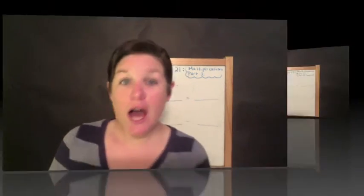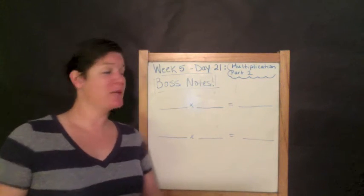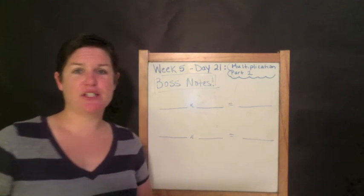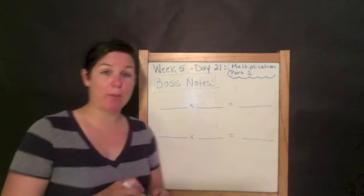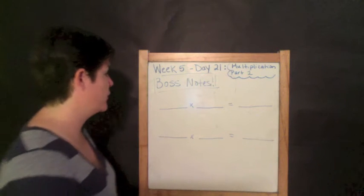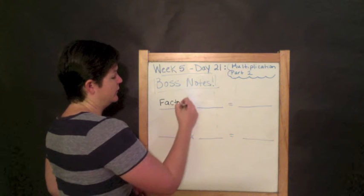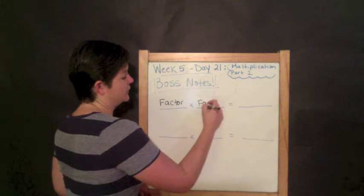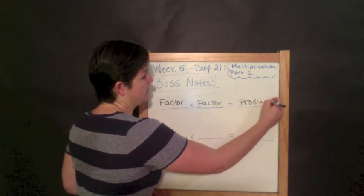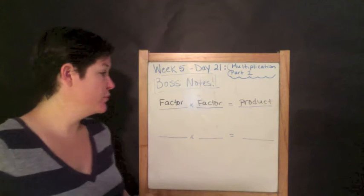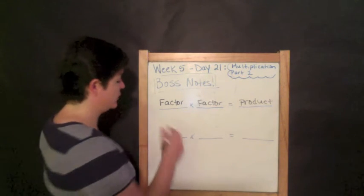Without further ado, let me teach you boss notes. We're on Multiplication Part One today. I'm teaching you how multiplication is groups of things. Go ahead and record this down: factor times factor equals the product. Factor times factor equals the product.